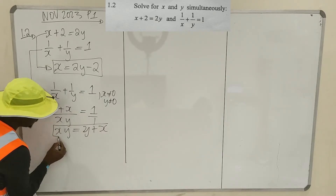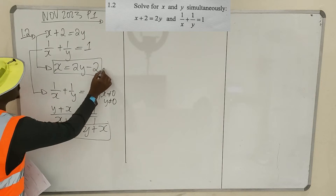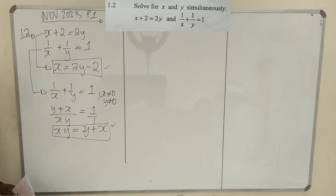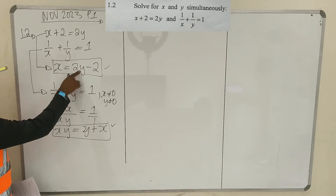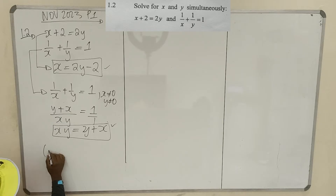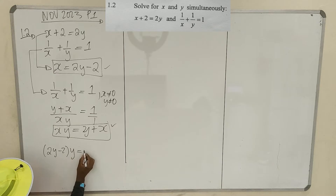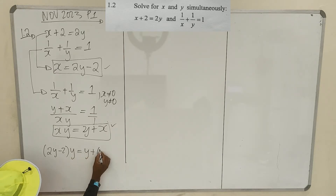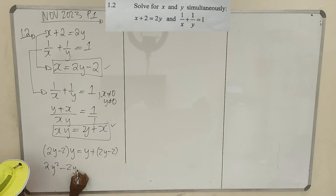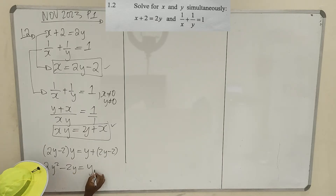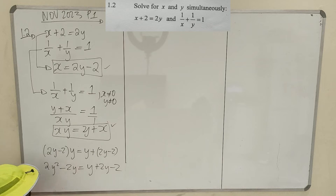Substitute x = 2y - 2 into xy = x + y. So (2y - 2)(y) = y + (2y - 2). Expanding: 2y² - 2y = y + 2y - 2, which gives 2y² - 2y = 3y - 2. Transpose to get 2y² - 2y - 3y + 2 = 0.